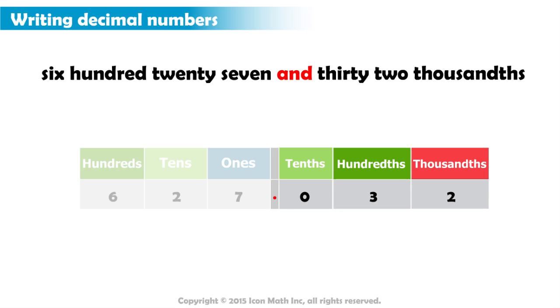As you can see, we have a zero in the tenths place, then three in the hundredths place, and finally, two in the thousandths place. This gives us the correct value, which is 32 thousandths. Now, the complete number is written correctly using base ten numerals, as represented in the place value chart.